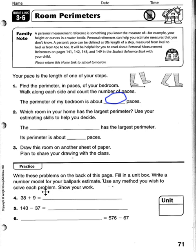In the first problem, the ballpark estimate should be 40 plus 10 equals 50. To solve, 38 plus 9: add the ones to get 17, carry the 1, which gives 47.